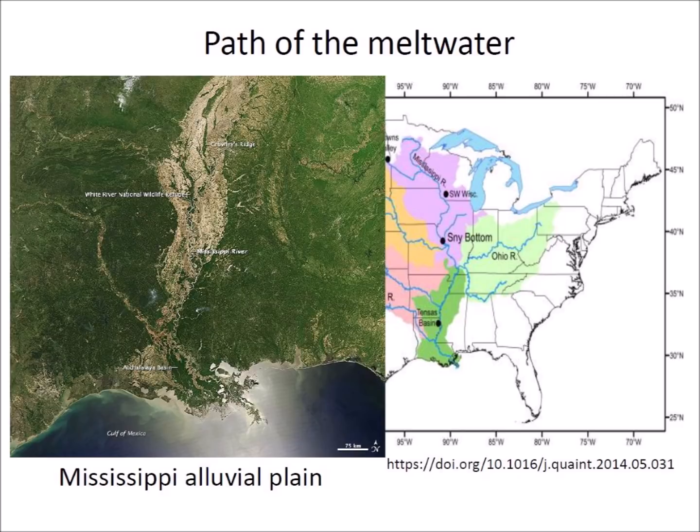The Mississippi's watershed drains all or parts of 31 U.S. states and two Canadian provinces between the Rocky and Appalachian Mountains. The Mississippi alluvial plain remains as evidence of the large floods at the end of the Ice Age.